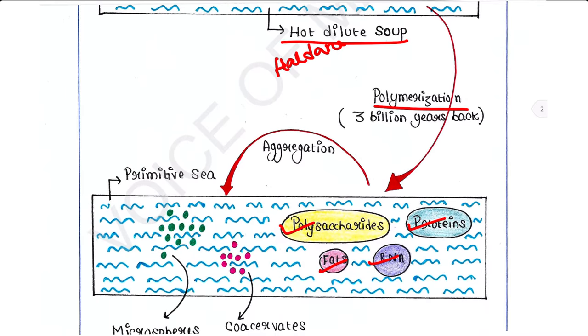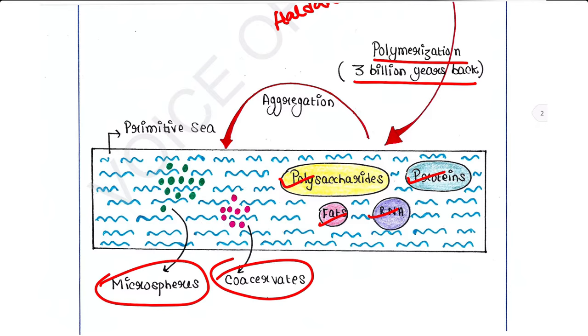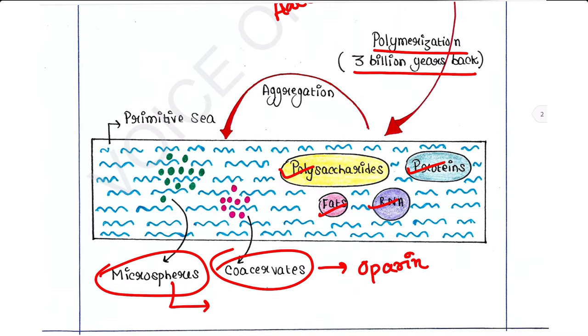About three billion years back, Oparin and Sydney Fox held that complex organic molecules synthesized in the ocean formed aggregates due to intermolecular interaction, which were known as coacervates and microspheres. These are cell-like structures but they are not true cells. The word coacervates was introduced by Oparin, whereas the term microsphere was introduced by Sidney Fox.